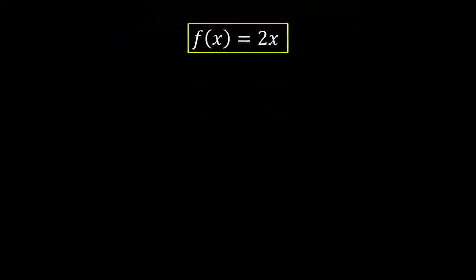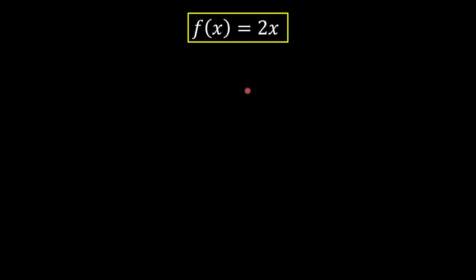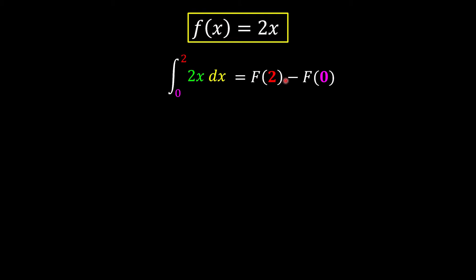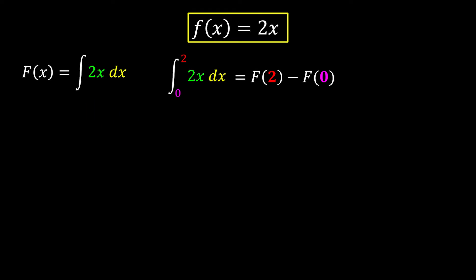So let's say we have a function of 2x and we're going to take the integration from 0 to 2 with respect to x. We just need to substitute our upper limit into the indefinite integral and minus the lower limit. Let us find the indefinite integral first. We increase the power by 1, giving us x squared over 2, but don't forget we have a 2 in front as well, so that gives us x squared plus C.